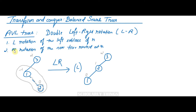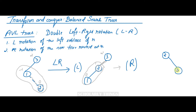Step two of LR rotation: perform R rotation of the new tree rooted at R (node 3). We consider the edge connecting root node 3 and its left child 2, and rotate this part to the right. Node 2 becomes the root, node 3 goes to the right, and node 1 is at the left. Balance factors are all 0. After performing LR rotation, the AVL tree is now balanced.